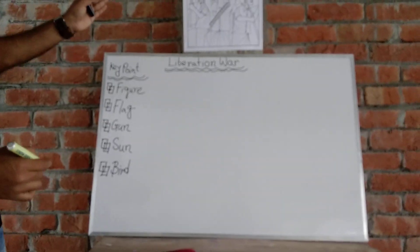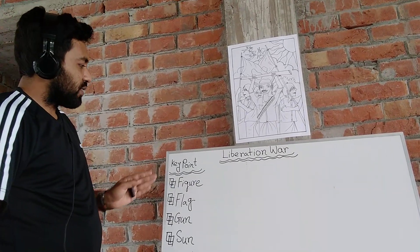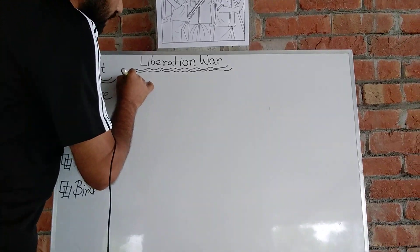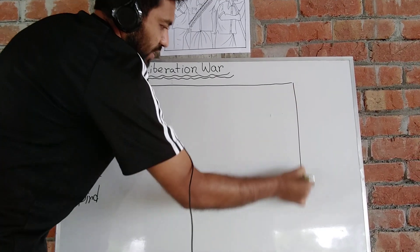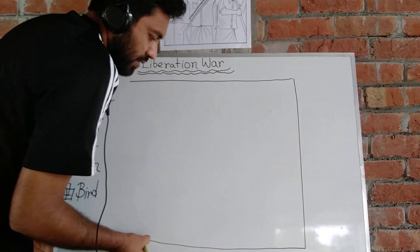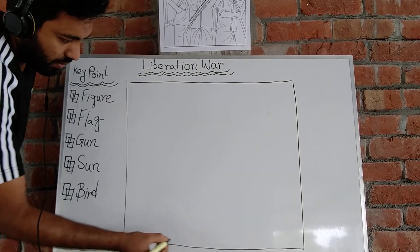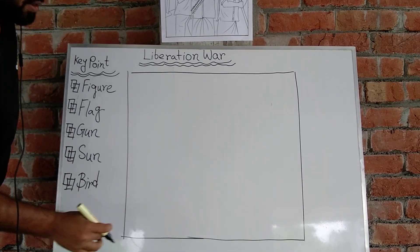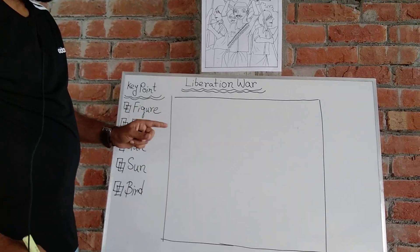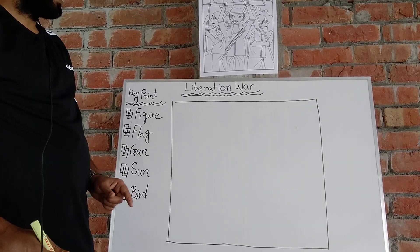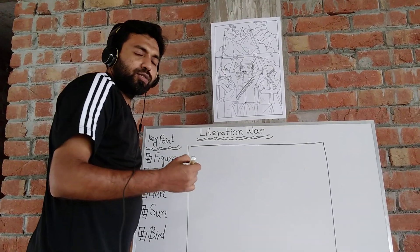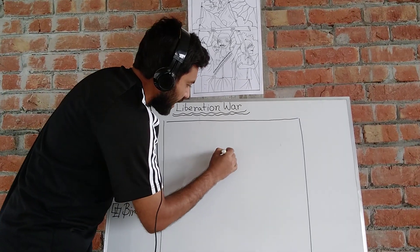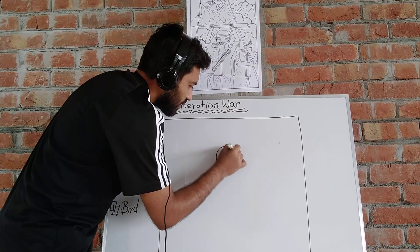So these are our key points. Now at first we prepare our page like this way. Now we start our drawing from its focal point. I think all of my students know about focal point. Okay, at first we give a circle.